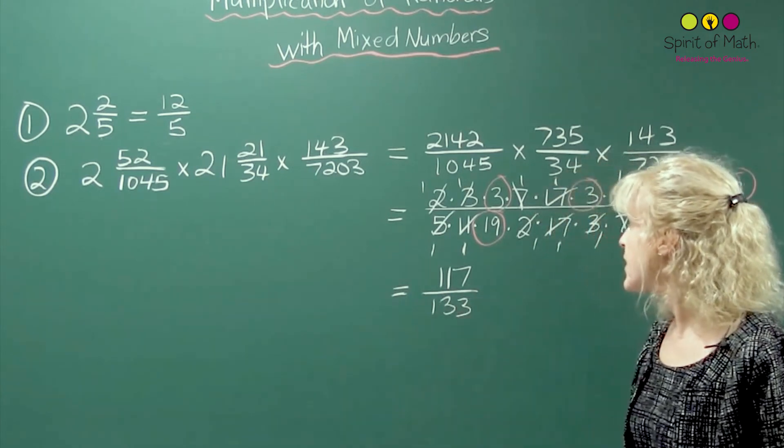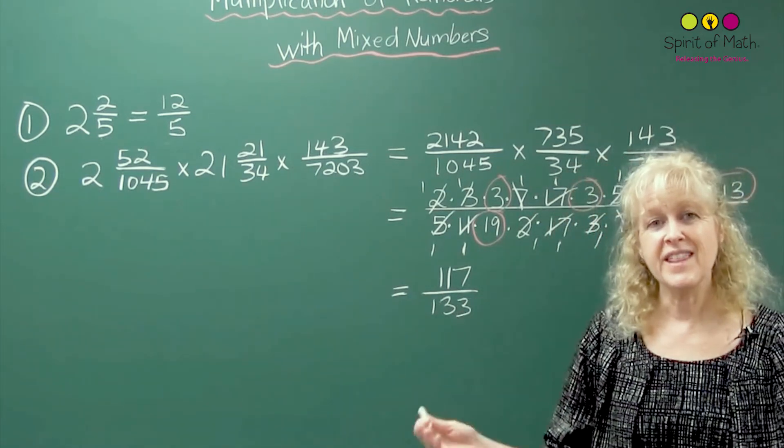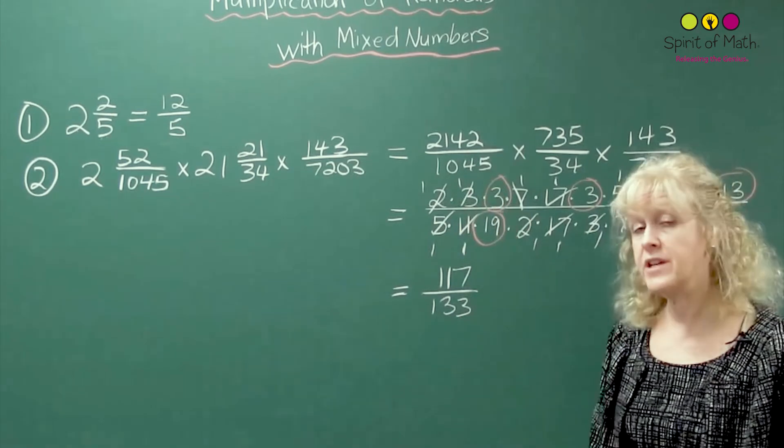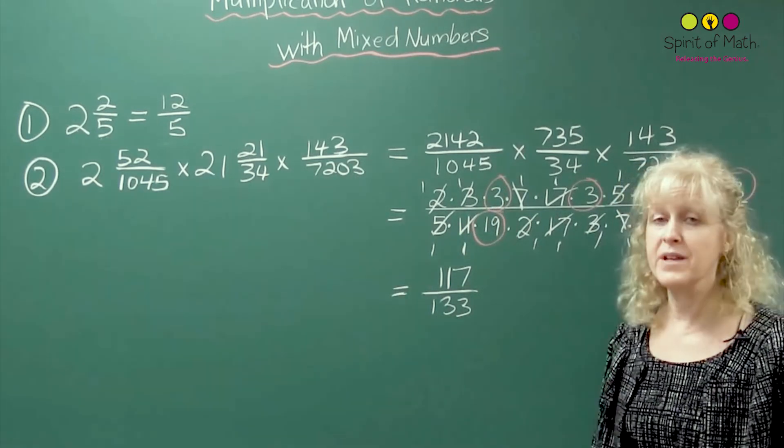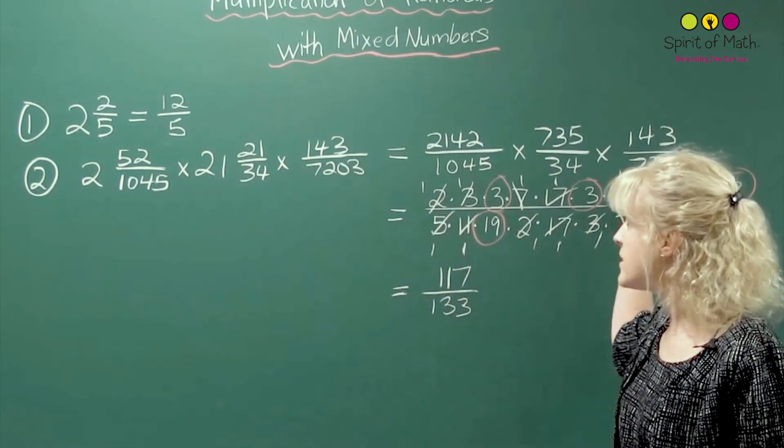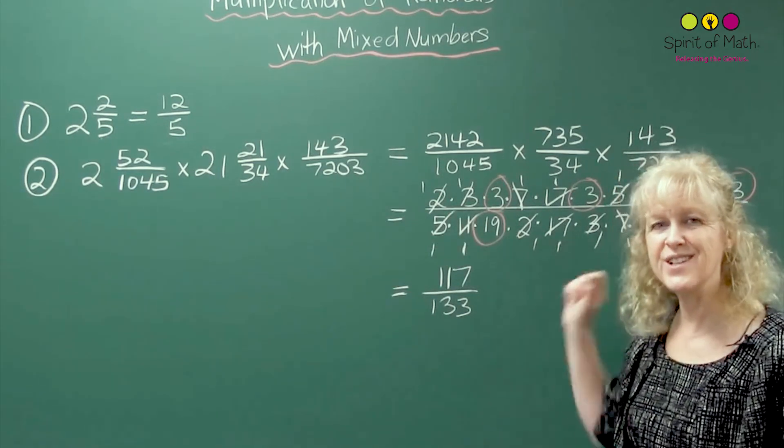So, you've got all that done, and that's it for multiplication of rationals with mixed numbers, instead of without mixed numbers. The first step is the only addition. That's it.